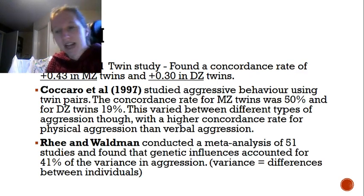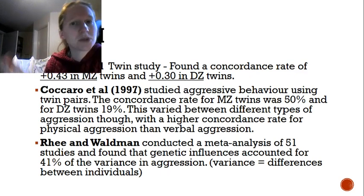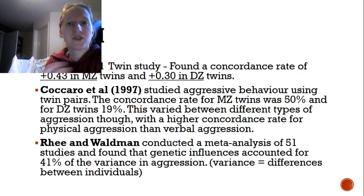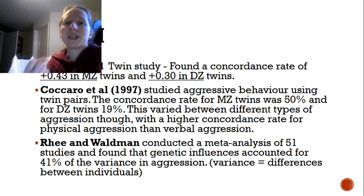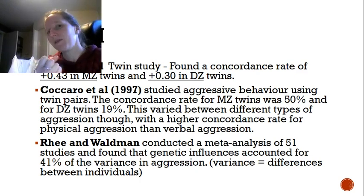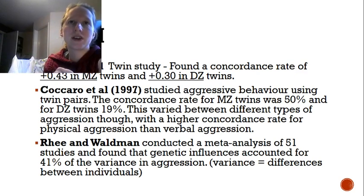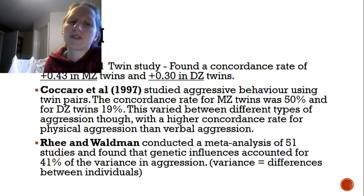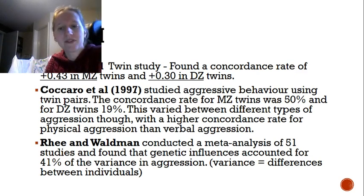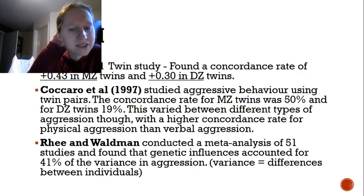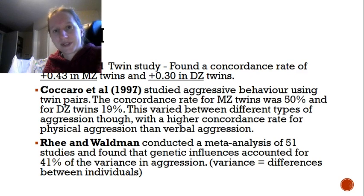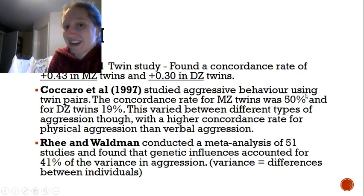The last study is Rhee and Waldman, a meta-analysis of both twin studies and adoption studies. In adoption studies, if you want to find a genetic component, you'd look for similarity in behavior between the adopted child and their biological parents, rather than their adoptive parents. Rhee and Waldman found that genetic influences accounted for 41% of the variance in aggression. Having looked at all these different studies, they concluded that genetic influences were playing a part.